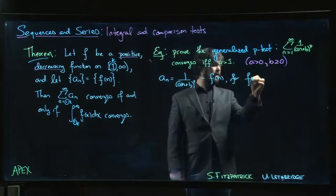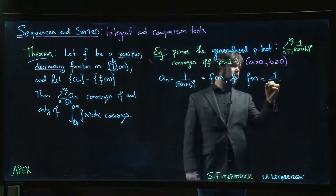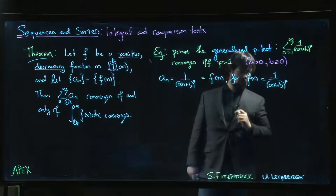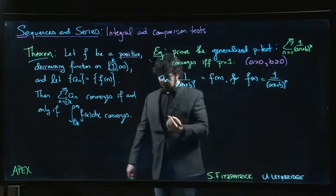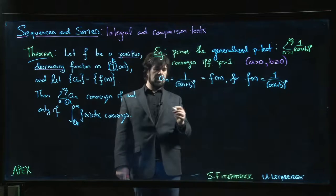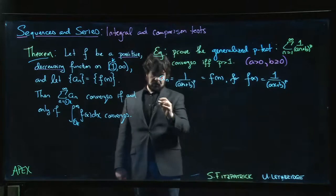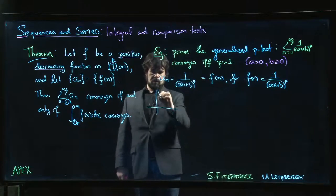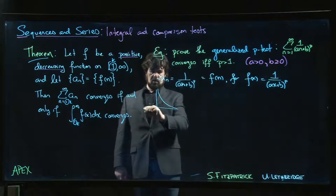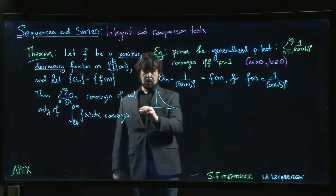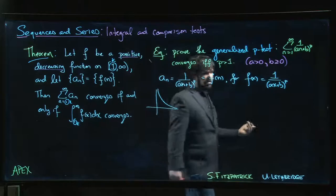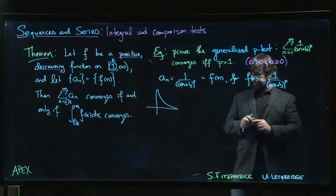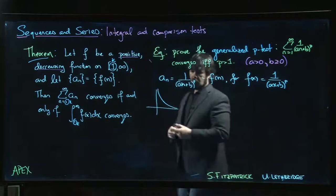That's just some transformed version of 1 over x to the p. And 1 over x to the p, assuming that p is positive here, is going to look like that. We get the positive decreasing function that we're supposed to have. So we look at the integral and say, okay, what do we get?